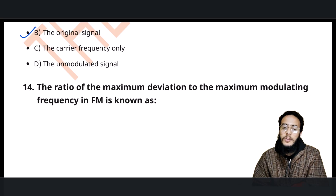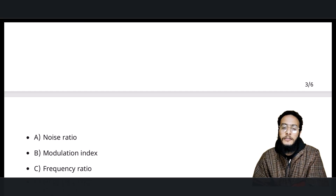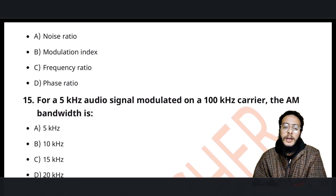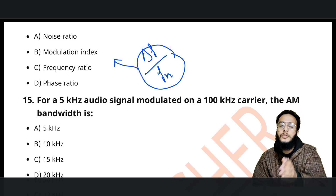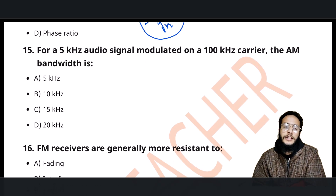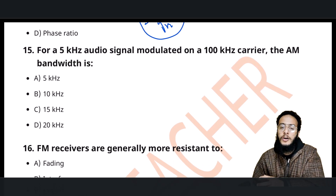The ratio of maximum deviation to the maximum modulating frequency: in FM modulation, we write the modulation index as delta-f divided by fm. This ratio gives us the modulation index. For example, a 5 kHz audio signal modulated on a 100 kHz carrier.